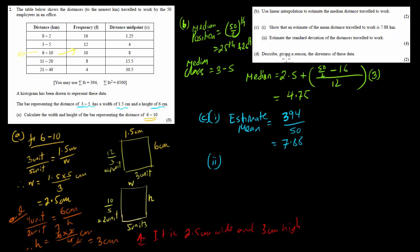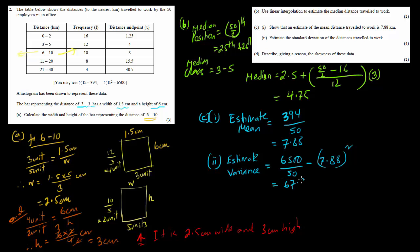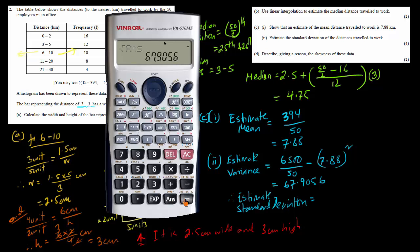For question (c2), we estimate the standard deviation. We first calculate the variance using the formula: Σfx² ÷ n − mean². Here Σfx² = 6500 is given, so variance = 6500 ÷ 50 − 7.88² = 130 − 62.0944 = 67.9056. Taking the square root gives an estimated standard deviation of 8.24.